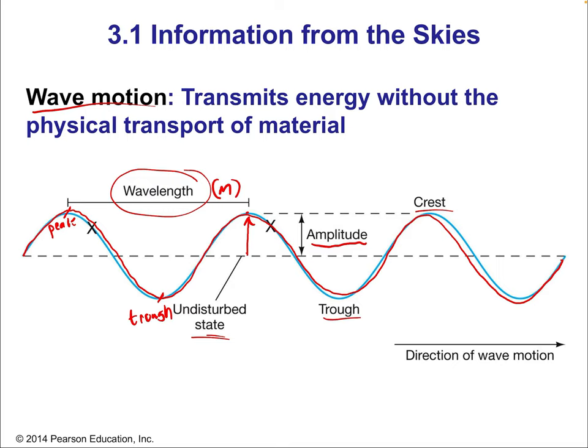Waves move — they have motion, they don't stay at rest. They're always moving, which means they change in both space and time. We call a wave a traveling oscillation. They transmit energy without physically transporting the material. So an ocean wave moves through the ocean but doesn't carry the ocean with it. A sound wave travels through the air but doesn't carry the air with it — all the air molecules are left where they started.